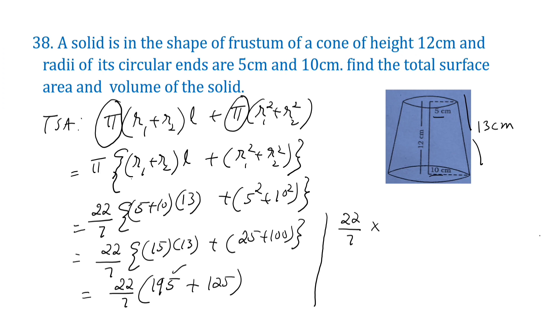That equals 22/7 times 320. 195 plus 125 equals 320. That equals 22 times 320 divided by 7, which equals 7040 divided by 7.